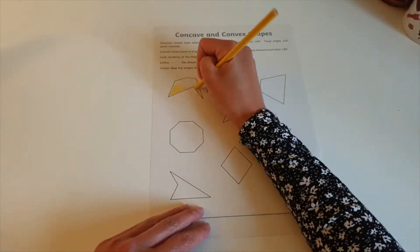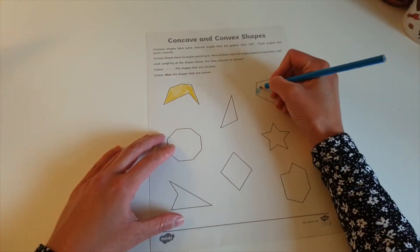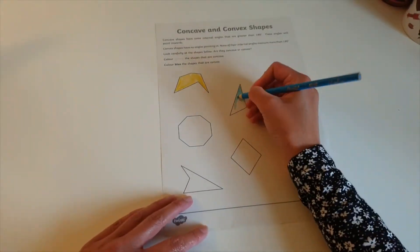To use this resource, children simply must color in the shapes in yellow if they are concave or blue if the shape is convex.